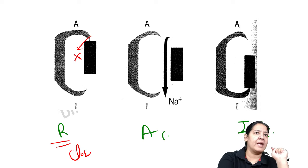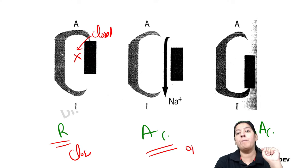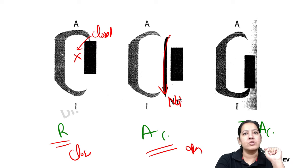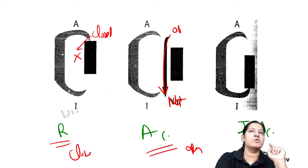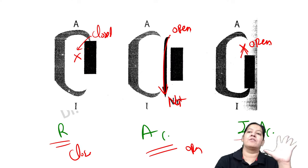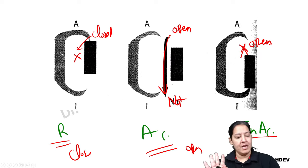In the resting state, the sodium channel is closed. In the active state, it opens and sodium comes inside. In the inactive state, it is still open but sodium cannot enter — it is refractory. After the inactive phase it returns to resting. The sequence cycles: resting → active → inactive → resting. This inactive stage is the most important for understanding the drug mechanism of action.